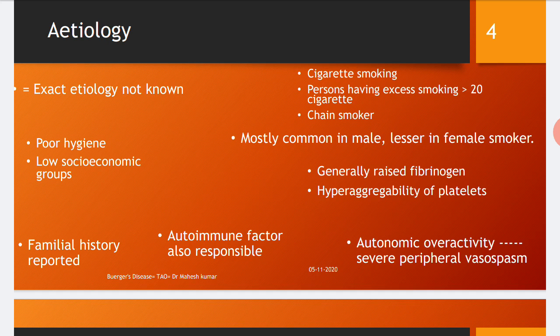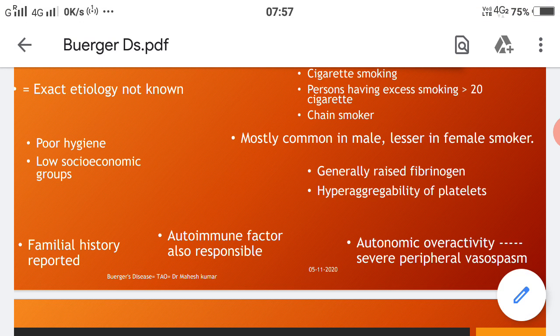The exact etiology of Buerger's disease is not known. However, there are predisposing factors which promote the causes: low socioeconomic groups and poor hygienic persons are affected more; familial history is also reported; autoimmune factors are also responsible; and most importantly, cigarette smoking — persons having excess smoking of more than 20 cigarettes per day, or a history of chain smoking.